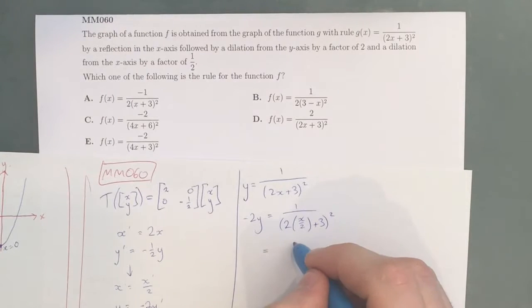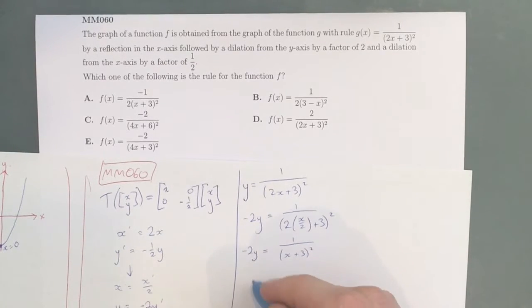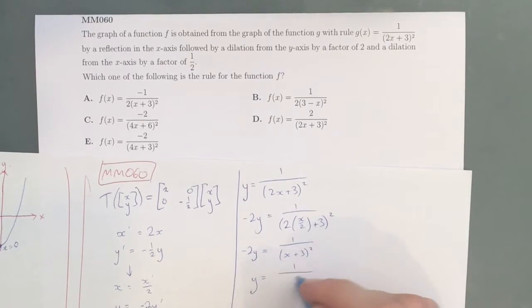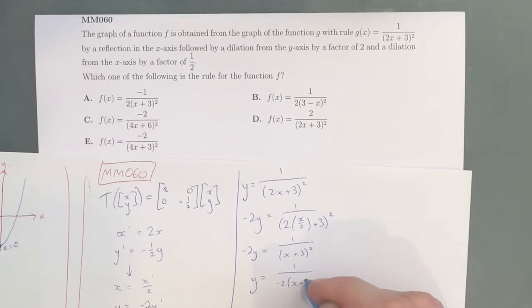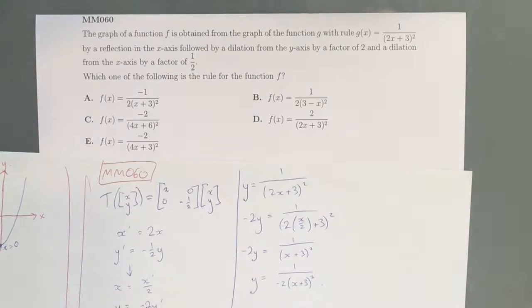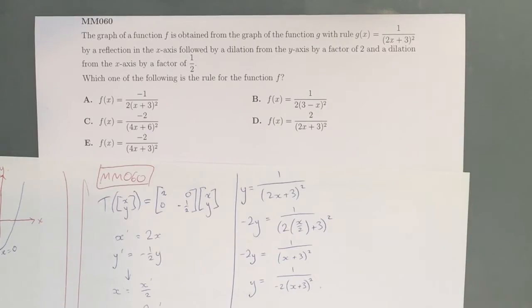From here, we can fix this up. So 2 times x/2 is just x, so this becomes (x+3)². So -2y, which means that y = 1/(-2(x+3)²), which correlates to our answer A.